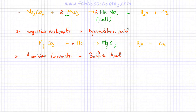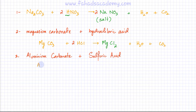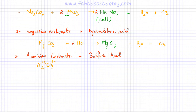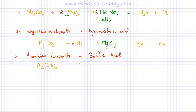Now the third example: aluminium carbonate reacting with sulfuric acid. First, find the formula of aluminium carbonate. Aluminium is in group 3, so it has a charge of 3+. Carbonate is CO₃ with a charge of 2−. Using the crisscross method, the formula is Al₂(CO₃)₃ — two aluminium ions and three carbonate ions. They're reacting with sulfuric acid, H₂SO₄.